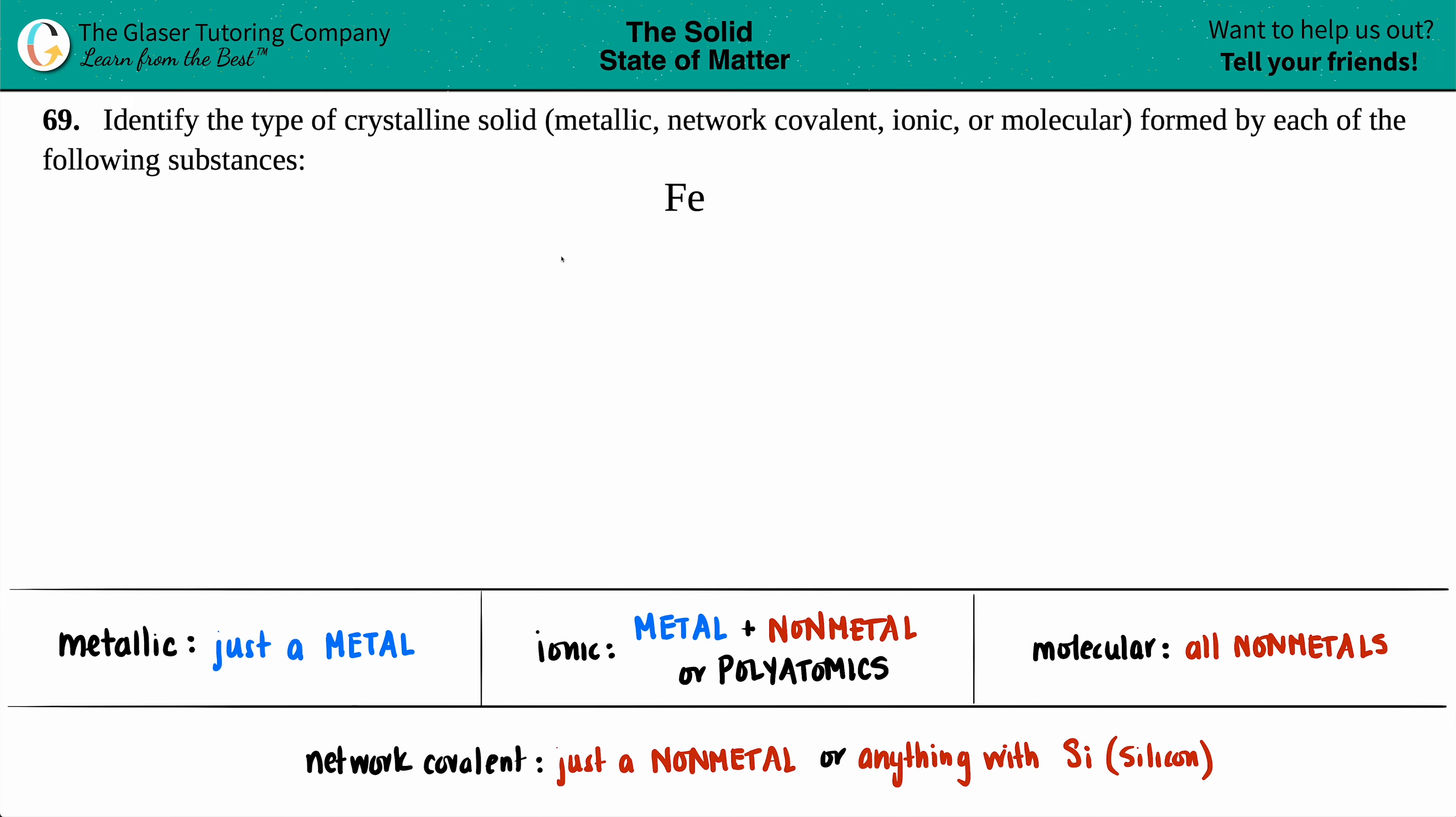Number 69: Identify the type of crystalline solid - whether it's metallic, network covalent, ionic, or molecular - formed by each of the following substances. And then we just have iron Fe. Well there's four different types of crystalline solids and I wrote the differences down here for you guys to memorize just in case it's on your next quiz or test.